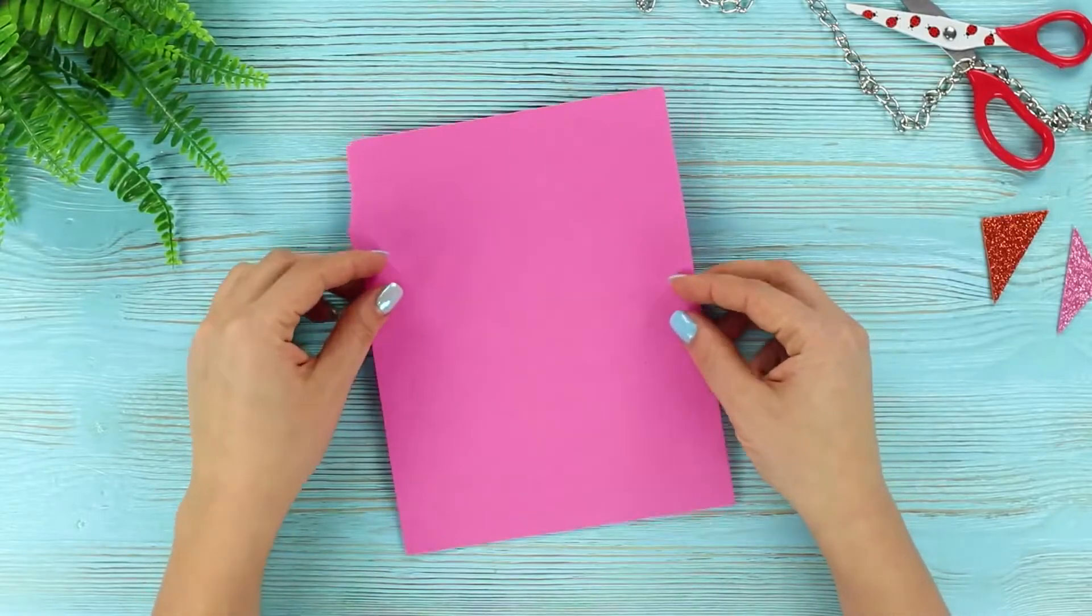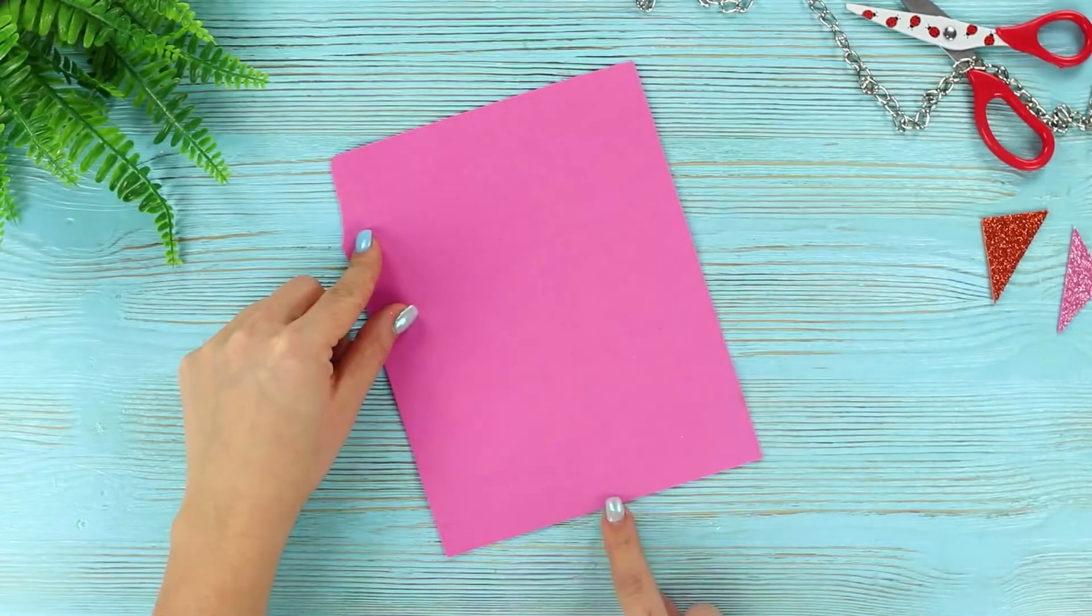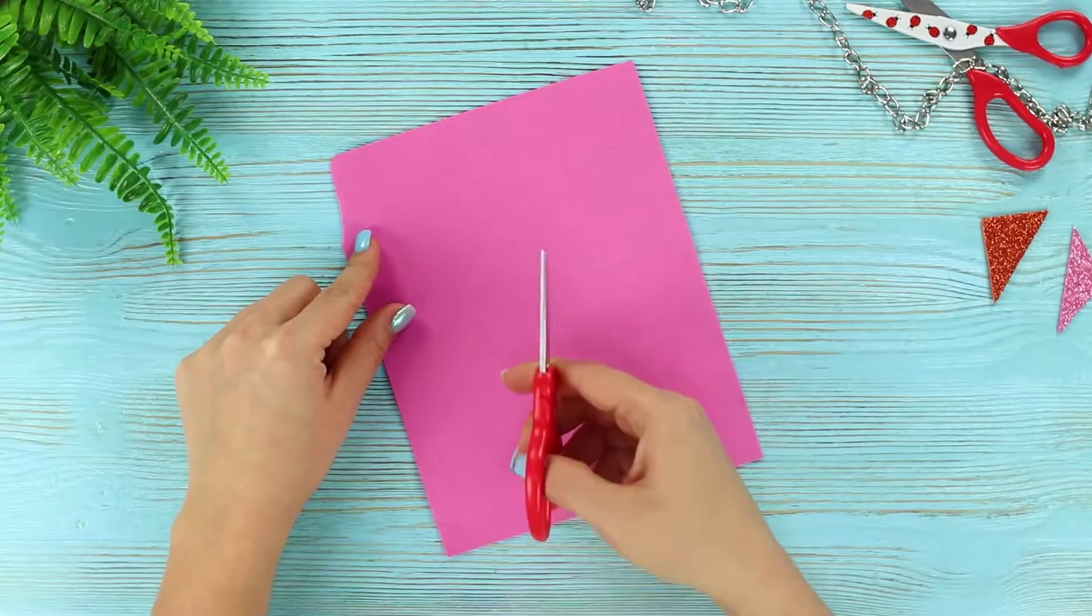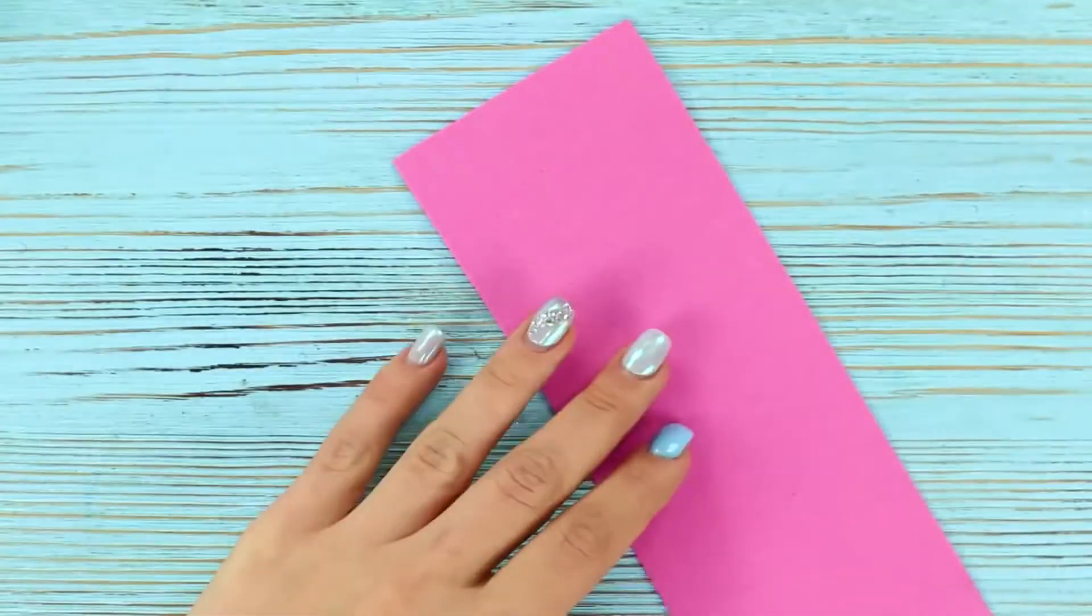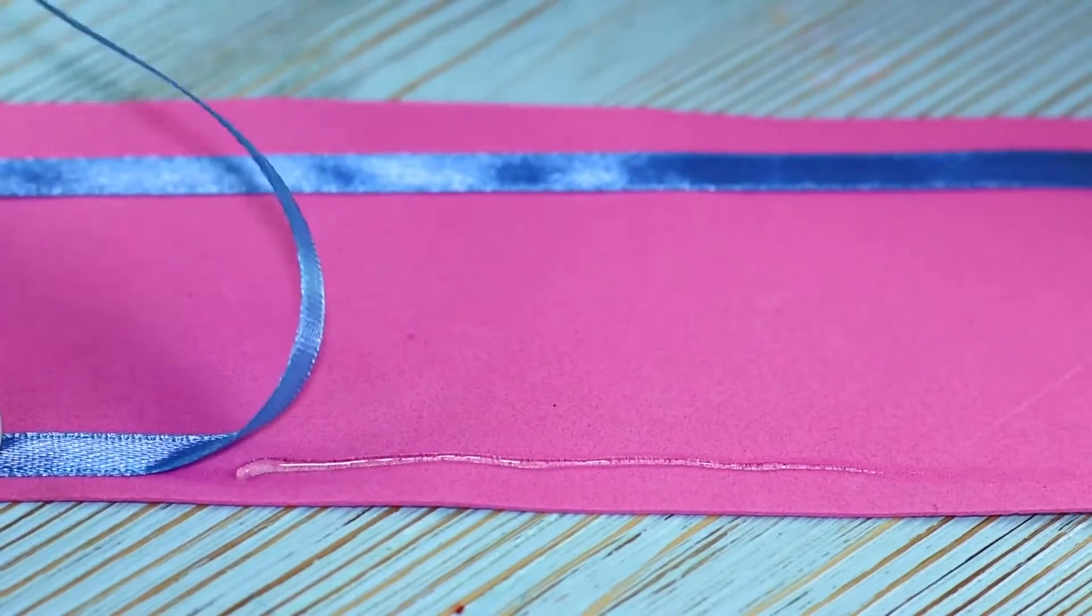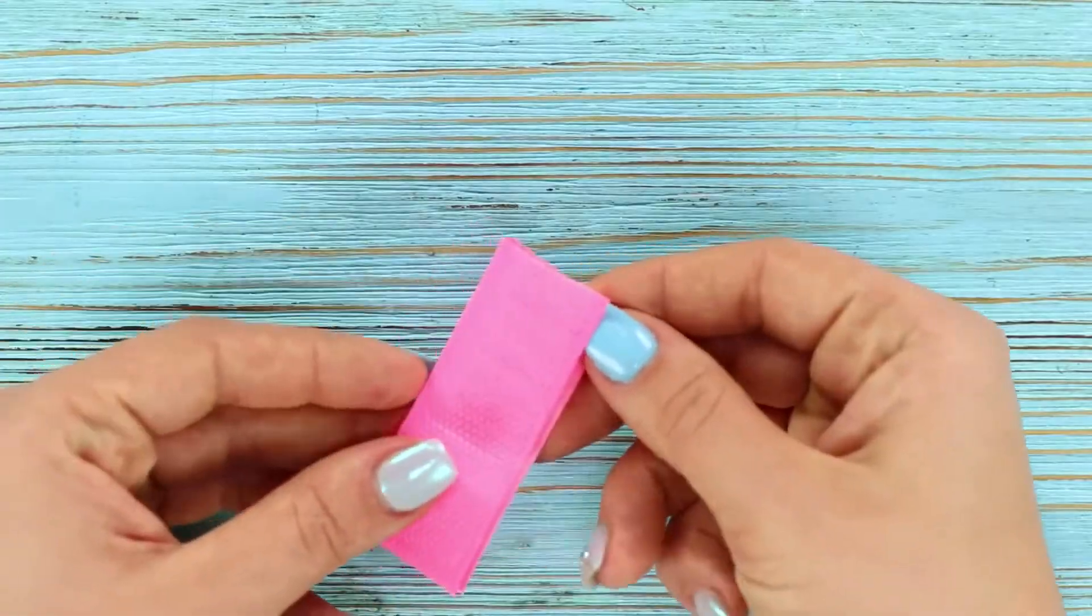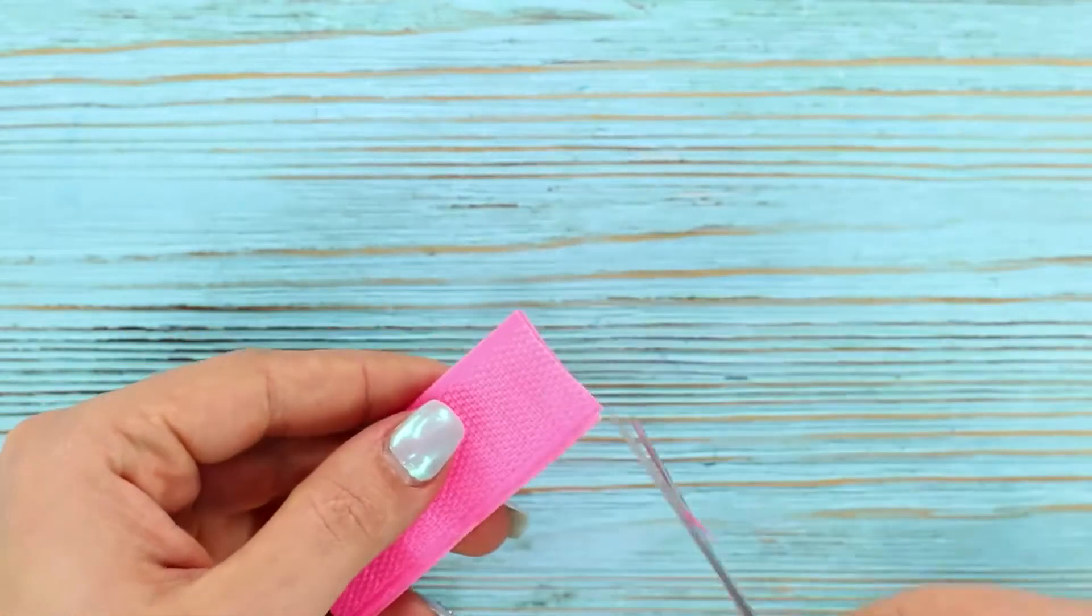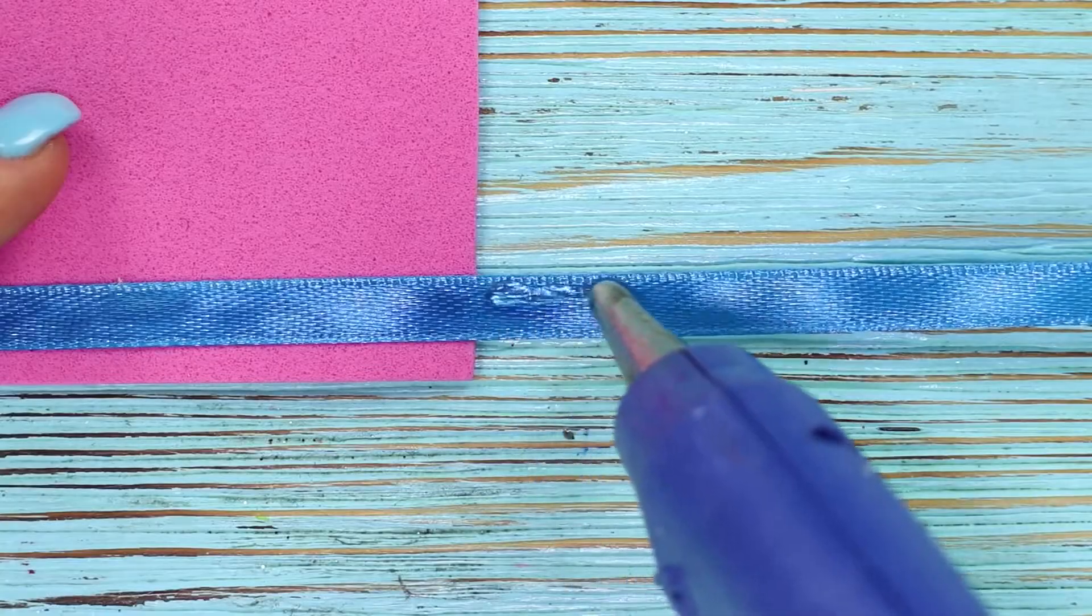And now let's see how many calories you can burn with a piece of a foam rubber sheet. Cut the sheet in half. Hot glue thin ribbons on each side. Take a piece of velcro and cut out a small piece. Glue it to the ribbon.